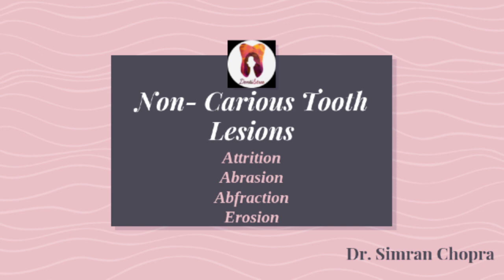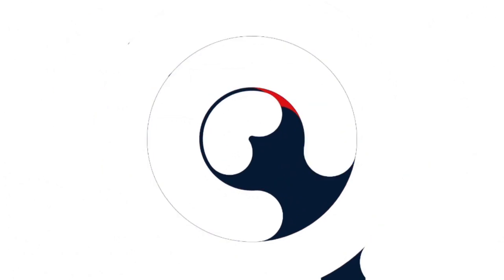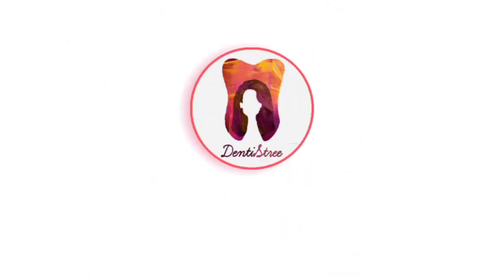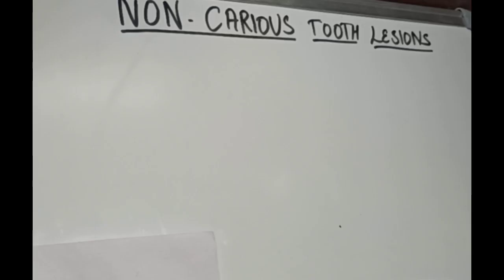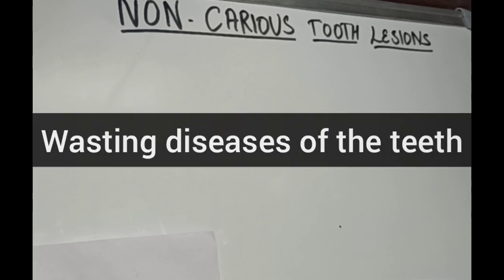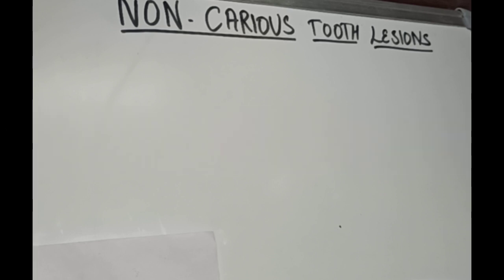Today we'll be talking about non-carious tooth lesions. The primary cause of tooth substance loss is dental caries. However, there are certain other non-carious conditions which eventually result in the loss of tooth structure. These non-carious tooth defects, also called wasting disease of the teeth, is a gradual loss of tooth substance characterized by the formation of smooth polished surfaces.